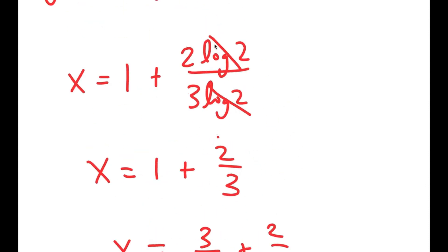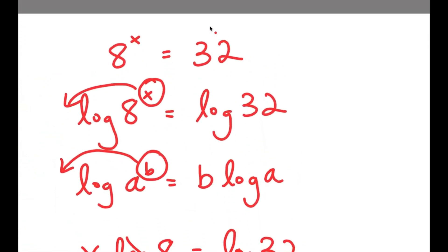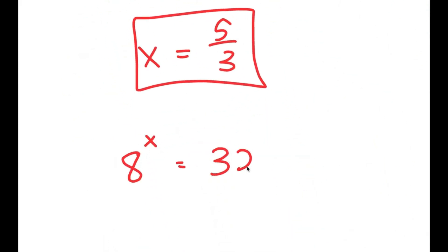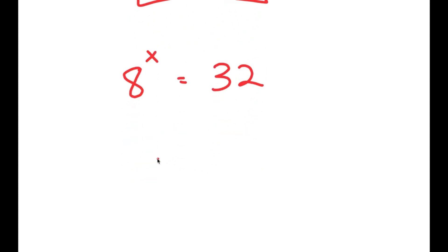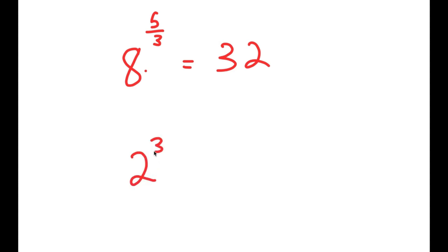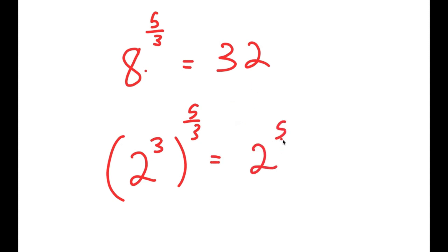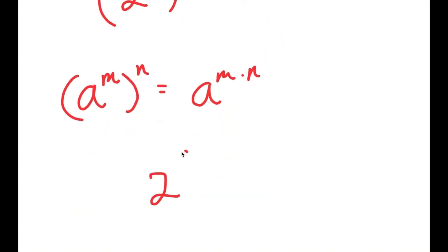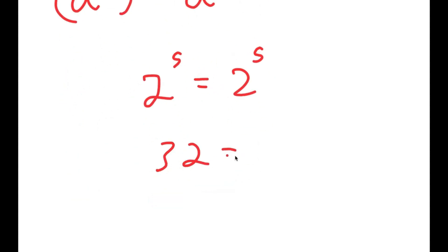Now, how do we know that this is the right answer? Going back, we have 8 to the power of x equals 32. Since 8 is the same thing as 2 to the power of 3, I get 2 to the power of 3 to the power of 5 over 3, which equals 32, the same thing as 2 to the power of 5. Using the rule a to the power of m to the power of n equals a to the power of m times n, the 3s cancel out, and I get 2 to the power of 5 equals 2 to the power of 5, or 32 equals 32.